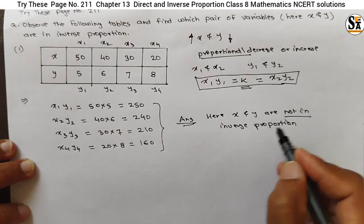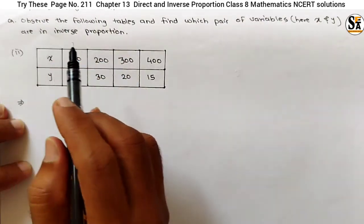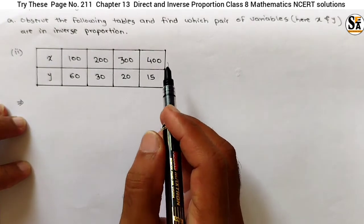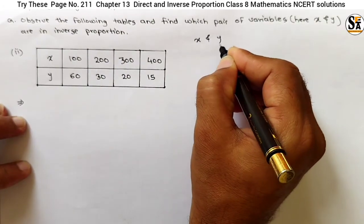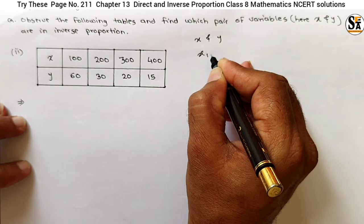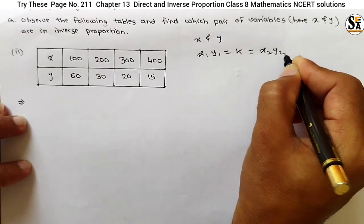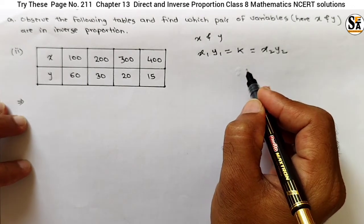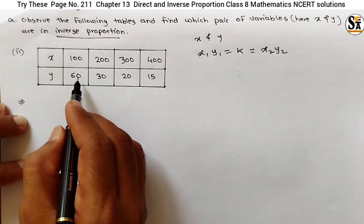Now let's see the second table of this question, page number 211. In the second table, x and y values are given and we have to find whether they are in inverse proportion. We know x and y are in inverse proportion only if the product x1 × y1 equals x2 × y2, which equals constant k — meaning if x increases, y decreases but in proportion.